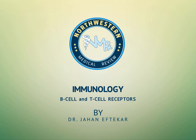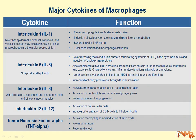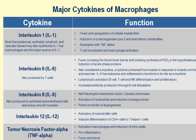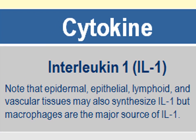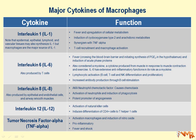Let us look at major cytokines produced by macrophages. There are five major cytokines you need to know with regards to macrophages. The first and foremost is interleukin-1. In addition to macrophages, interleukin-1 may also be produced by epidermal cells, epithelial cells, lymphoid cells, and vascular tissues. However, macrophages are by far the major source of interleukin-1.